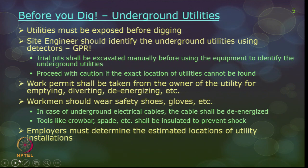The second precaution is to identify all buried underground utilities. There are so many underground utilities buried inside the ground — you must identify all of them so that you do not interfere with those utilities when placing your excavator equipment. All utilities passing through the site must be identified before you start digging. Utilities must be exposed before digging. The site engineer should identify underground utilities using detectors — you can also use ground penetrating radar (GPR). You must choose an appropriate GPR device based on what you want to scan, the depth of scan, and the accuracy required.